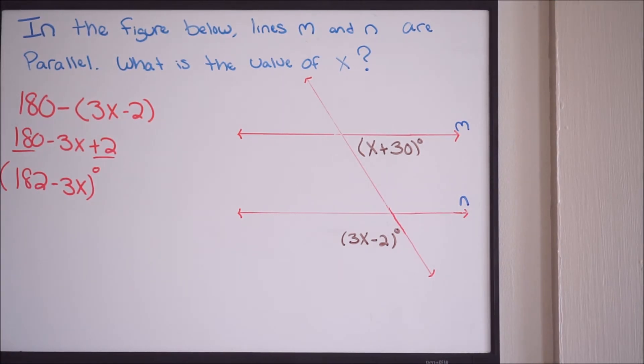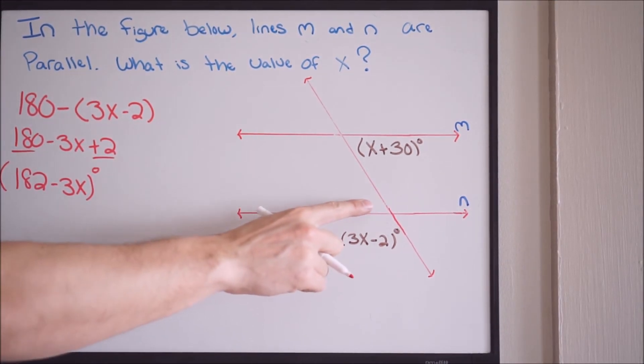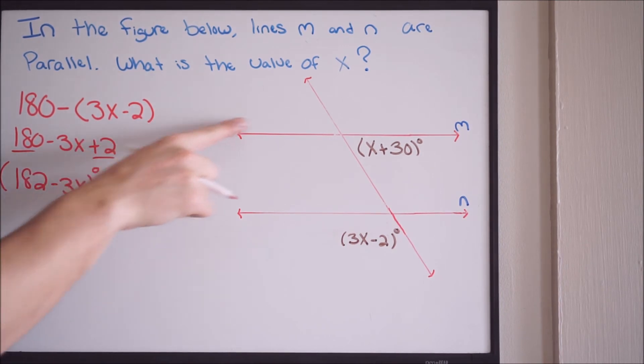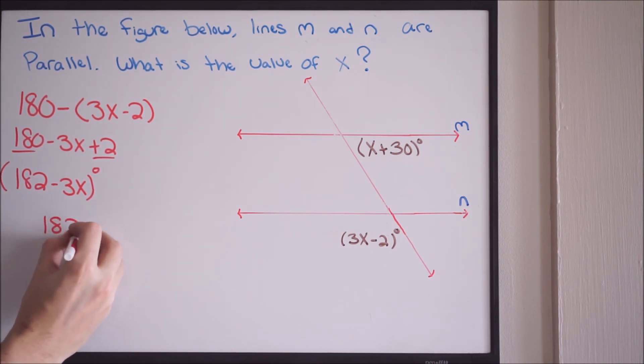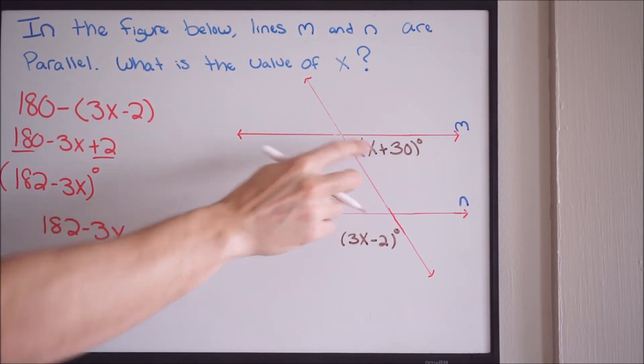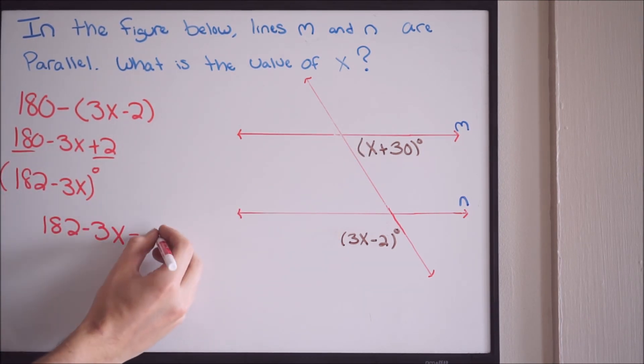So at this point, I have this angle here. And we talked about at the beginning of the video, since I'm dealing with two parallel lines here, I know that these alternate interior angles, they're going to be equal. So if I simply just set these two angles equal to each other, I can solve for x. And that will give you my answer. So again, here's my angle right here, 182 minus 3x. So if I have 182 minus 3x, I'm going to set that equal to x plus 30.